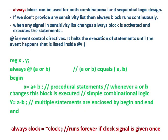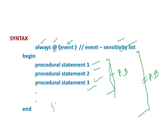This always block can be used for both combinational and sequential logic design. If we do not provide any sensitivity list, then the always block runs continuously — meaning if there is no sensitivity list mentioned inside the parentheses, then whatever statements are inside the always block will run continuously.